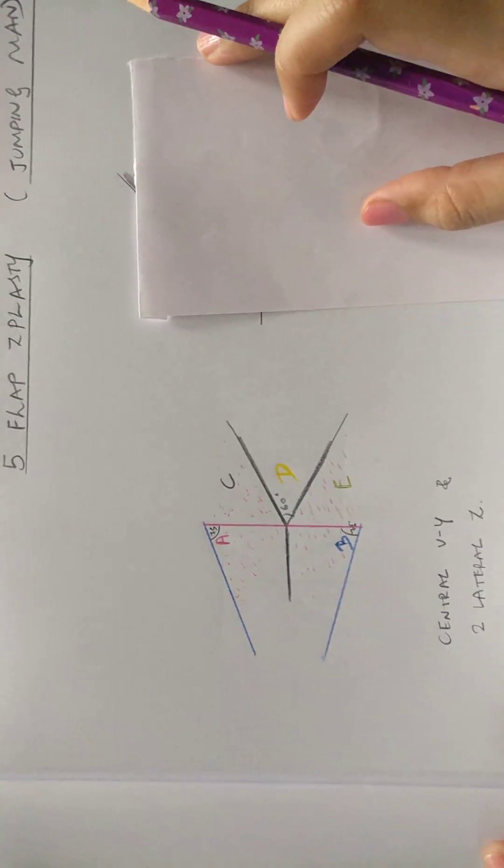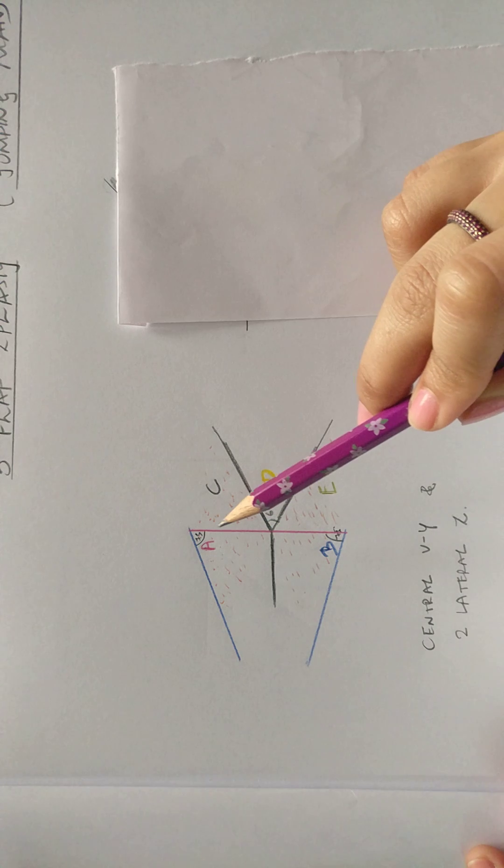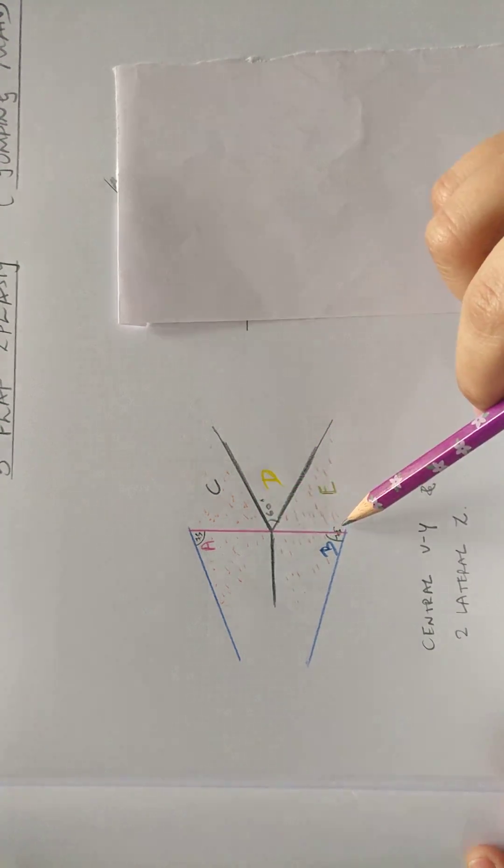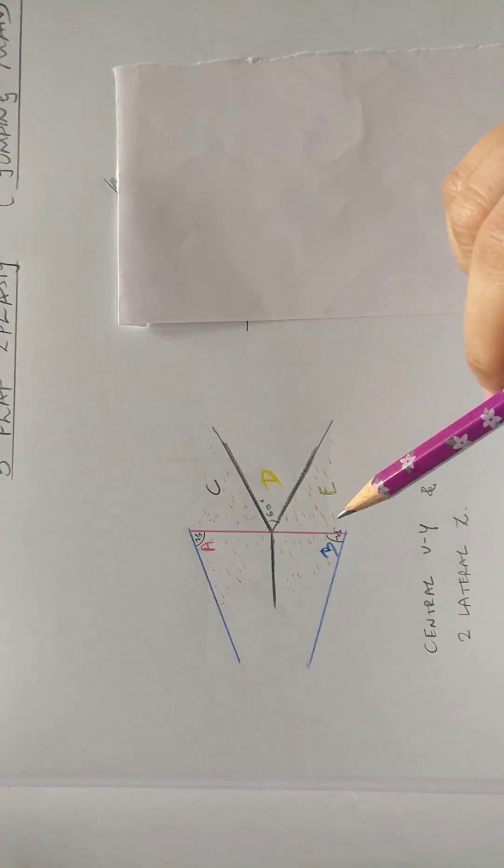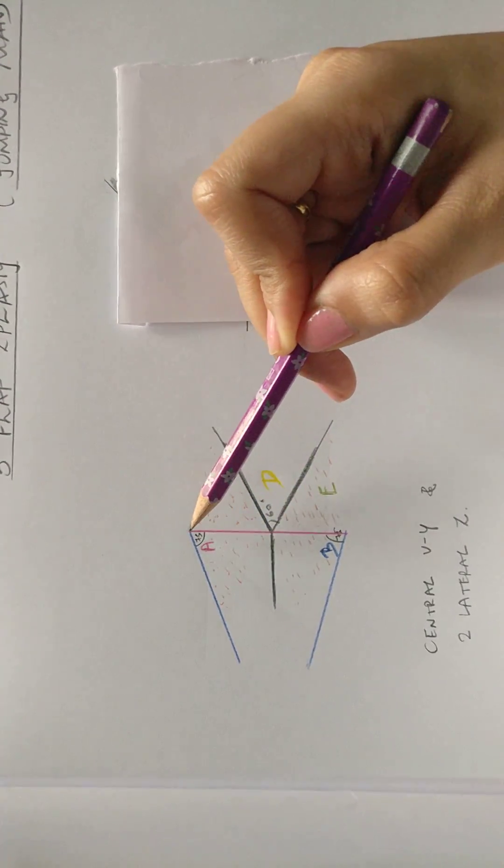This 5-flap Z-plasty actually consists of a central V-Y advancement flap along with two lateral Z-plasties. So to mark this Z-plasty, first the central limb which is the scar, that is the contracture diagonal, is marked.